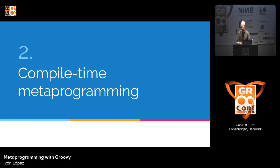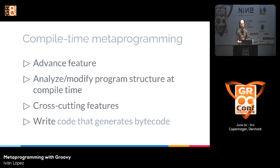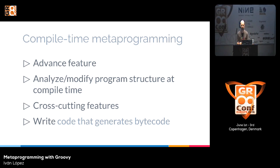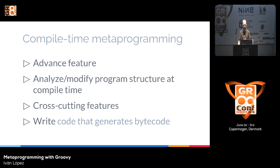That was runtime metaprogramming. Now let's talk briefly about compile-time metaprogramming. This is an advanced feature — not used every day, mostly in frameworks and libraries, though you can use it in your own code. With it, we can modify or analyze the program at compile time: implement different features, inspect classes for thread safety, generate log messages, or perform pre/post checks. We're writing code that generates bytecode — or at least code involved during bytecode generation.